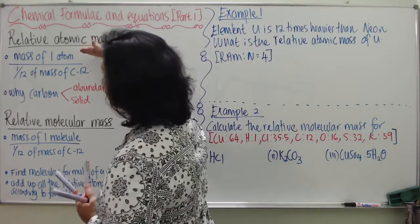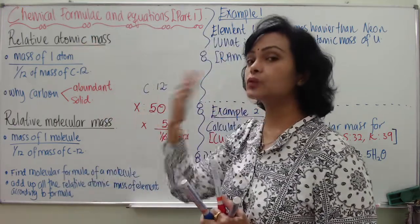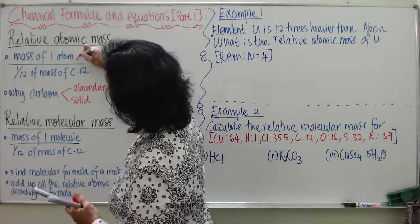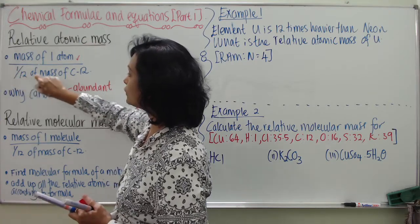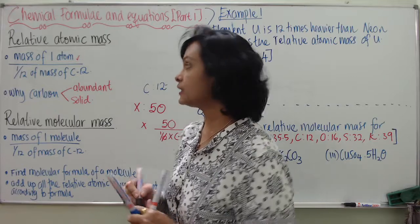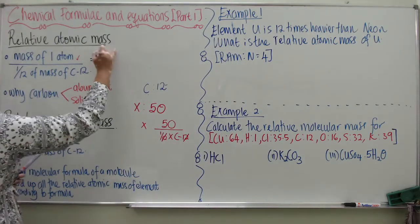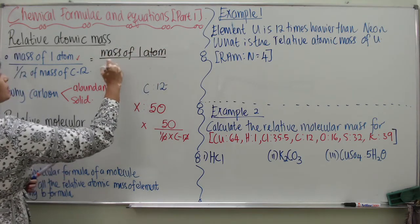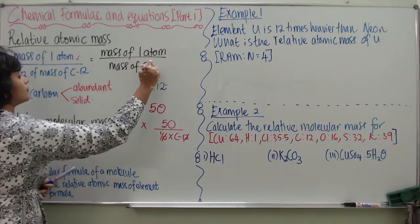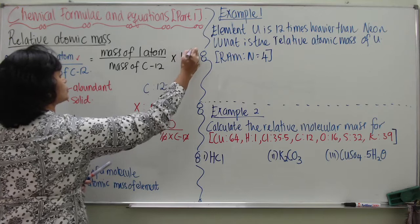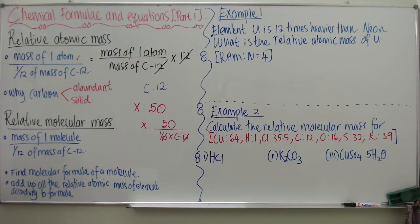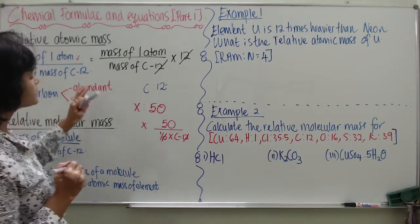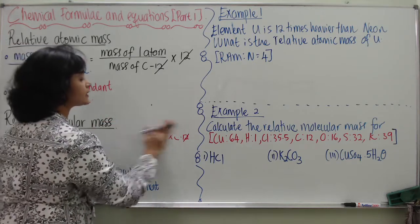Let me show you how to relate atomic mass to Carbon. The formula is: Relative Atomic Mass equals the mass of one atom divided by 1/12 of the mass of Carbon-12, which can be rewritten as mass of one atom divided by the mass of Carbon-12, multiplied by 12. That is why the mass of any atom is expressed relative to Carbon.